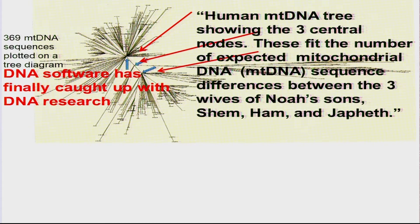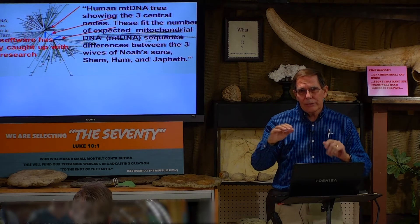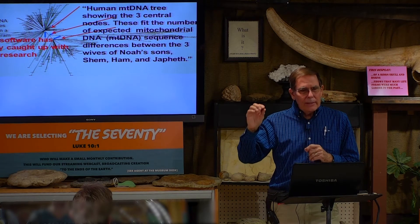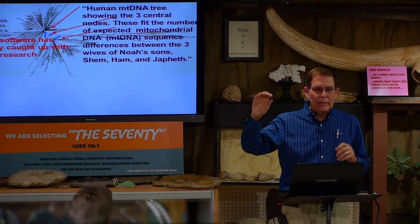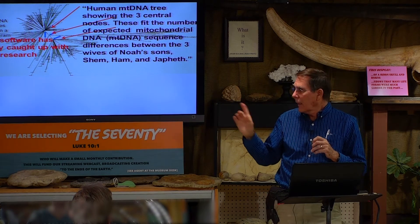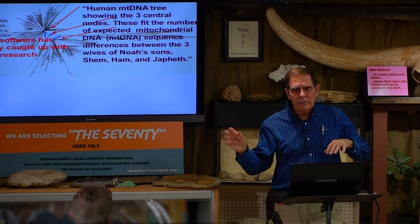DNA software has finally caught up with DNA research. Human mitochondrial DNA — a little word on that. It's a little piece of every cell. 99.5% of your DNA is in your nucleus, but one half of one percent is in your mitochondria. And that is always a female line. It's always female in the mitochondrial DNA, which is handy because it narrows things down and you can get to the bottom line quicker.